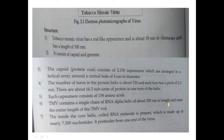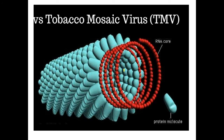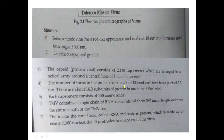The capsomers are arranged in a helical array around a central hole of 4 nanometers in diameter — keep this in mind for MCQs. The number of turns in the protein helix is about 130, and each turn has a pitch of 2.3 nanometers. There are about 16.3 subunits of protein in one turn.